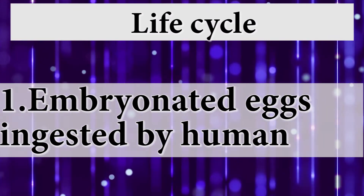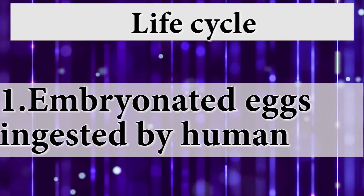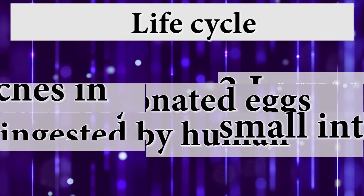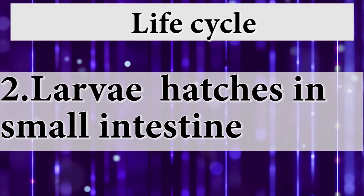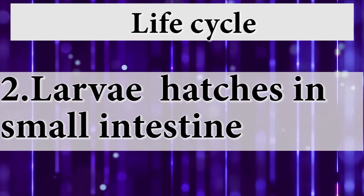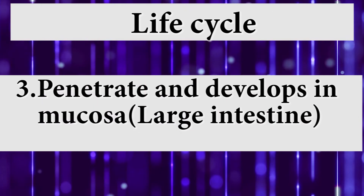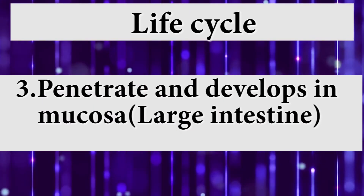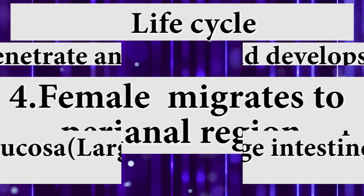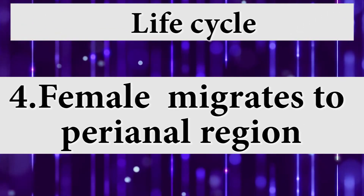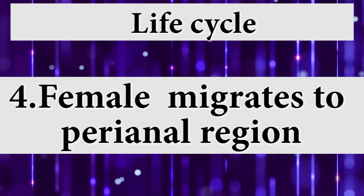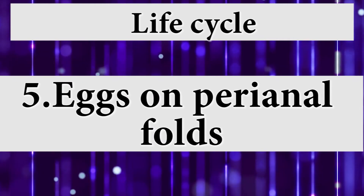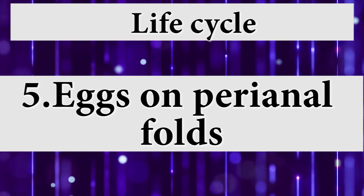Firstly, embryonated eggs are ingested by the human. After that, larvae hatch in the small intestine. Then, they penetrate and develop in the mucosa of the large intestine. The female migrates to the perianal region. Finally, eggs are deposited on the perianal folds.